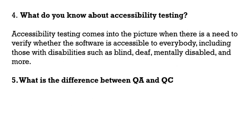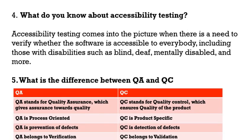The fifth question is: what is the difference between QA and QC? QA stands for Quality Assurance, which gives assurance towards quality, whereas QC stands for Quality Control, which ensures the quality of the product. QA is process-oriented whereas QC is product-specific. QA is about prevention of defects — we prevent defects as early as possible — whereas QC is about detection of defects once we get the product. QA belongs to verification whereas QC belongs to validation.